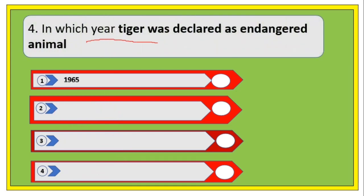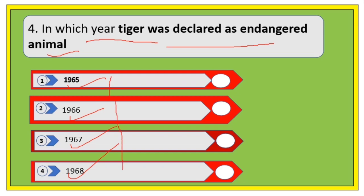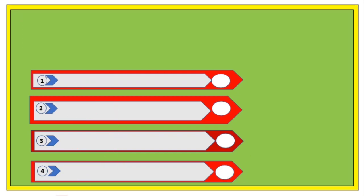In which year was the tiger declared an endangered animal? Options are 1965, 1966, 1967, and 1968. The right answer is 1968.